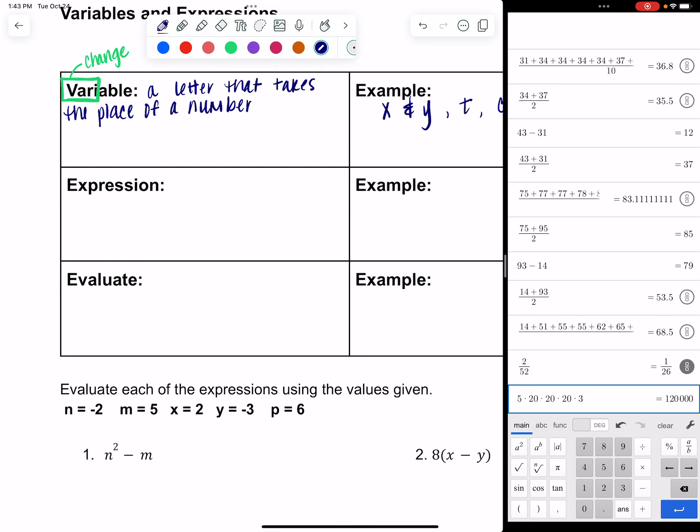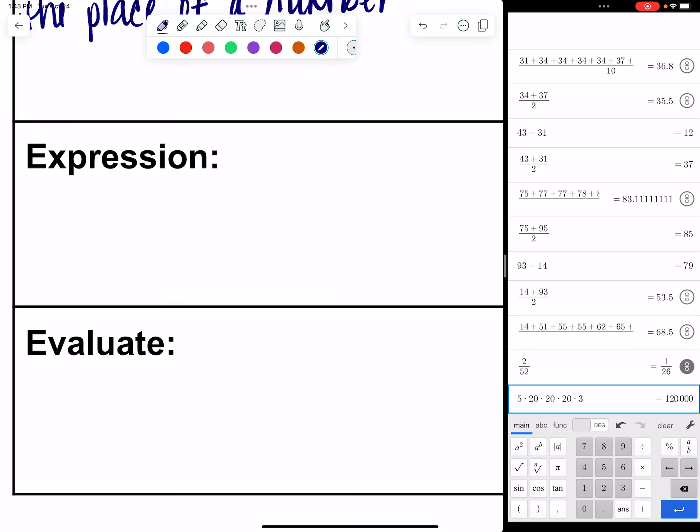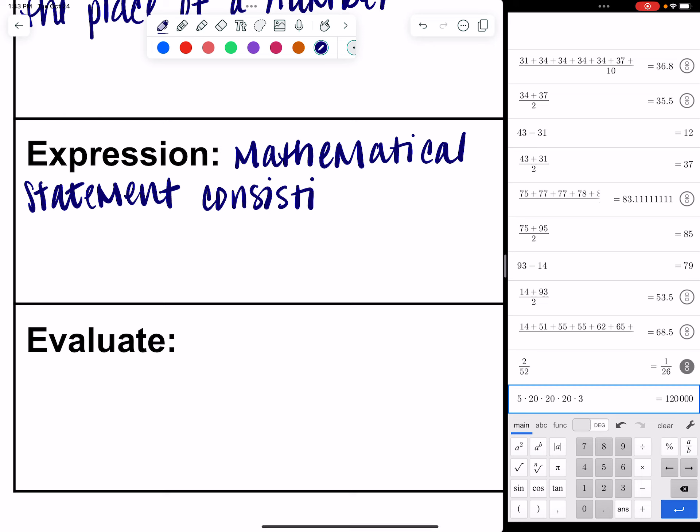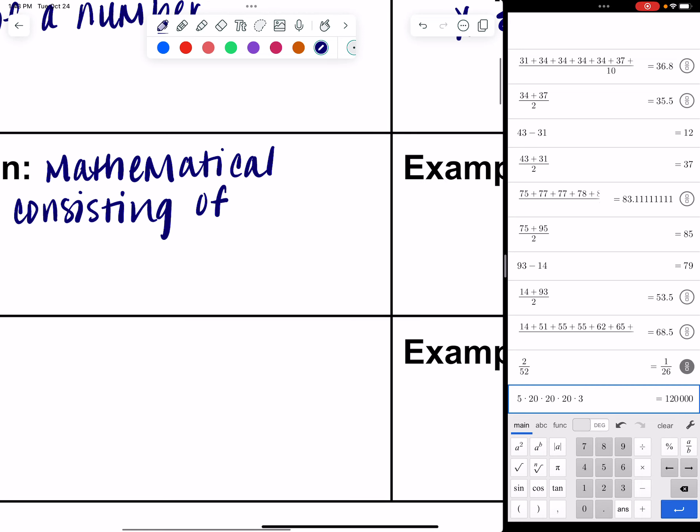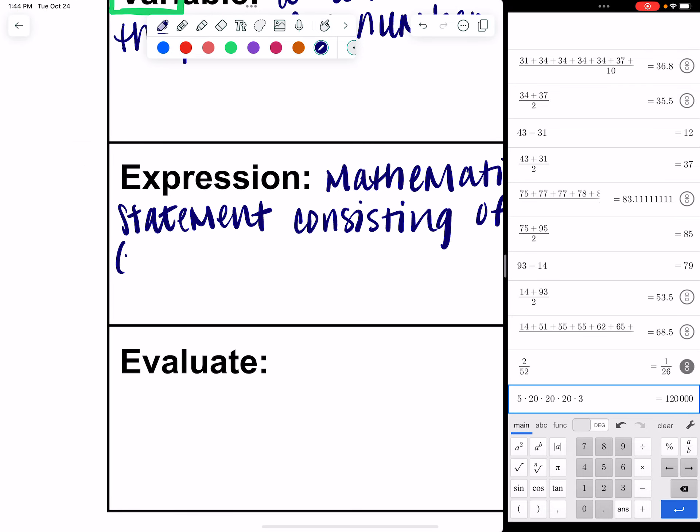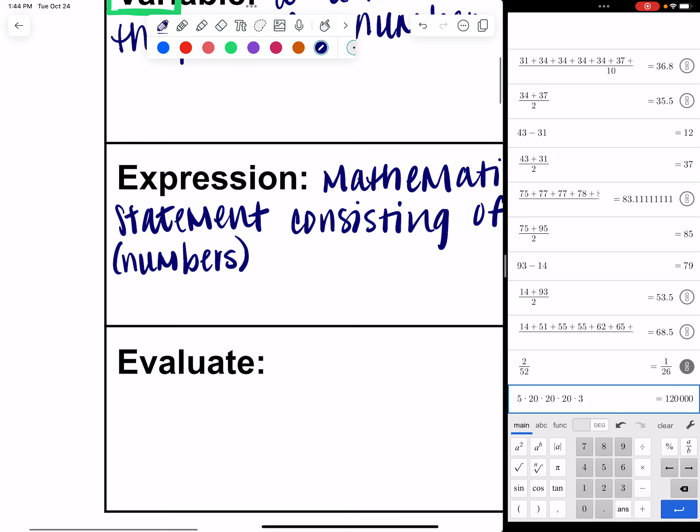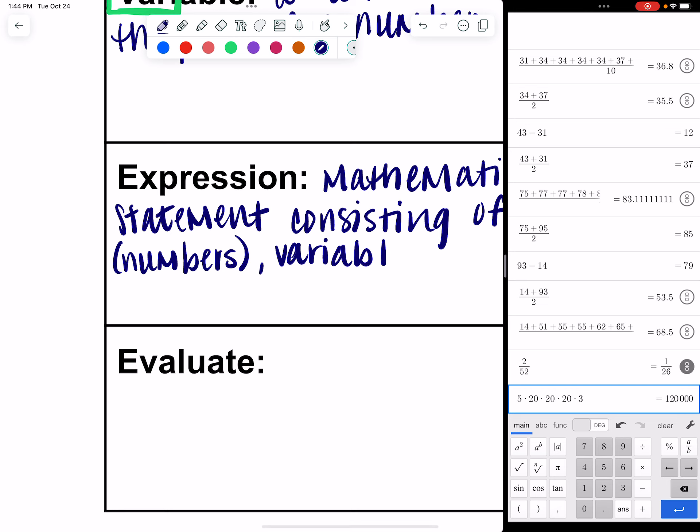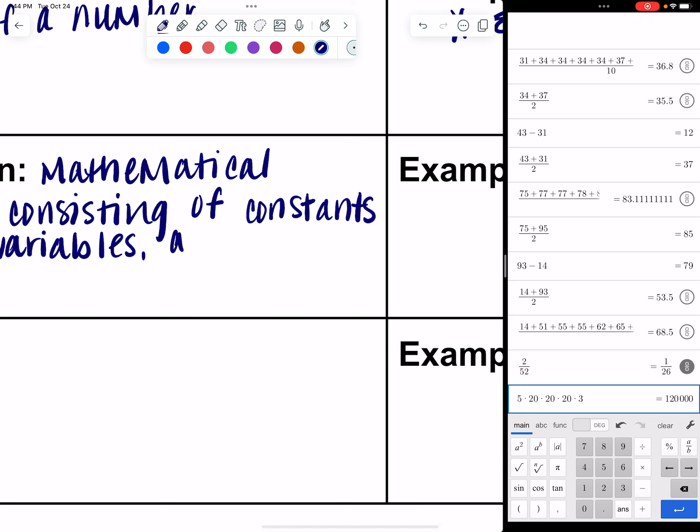An expression is a mathematical statement. Way cooler than a fashion statement. It's a mathematical statement consisting of constants. Constants are just numbers. Variables. And operations.